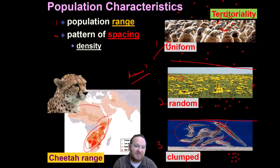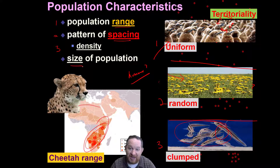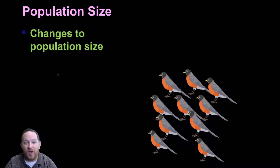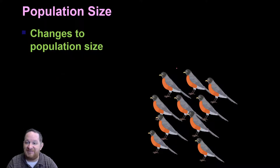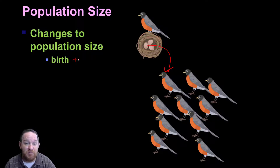And then the third way we might describe a population is in the size of the population. So, range, spacing, and size. How does the size of a population change, and what impacts population size? There are a few things that will affect population size. Here's my population of birds. One thing that might affect it is birth — if you have a bird, there's a bunch of eggs, you've got some new baby birds. Those are all going to add to the population. So birth increases population size.